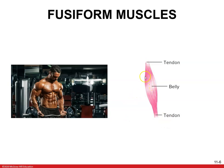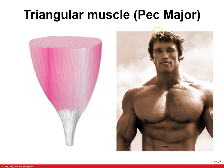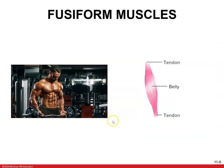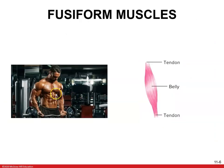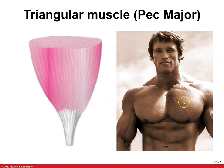Remember, tendons attach muscle to bone and ligaments attach bone to bone. Then you've got a triangular muscle — this is Arnold Schwarzenegger, who was our governor — broad on one side and then narrow on another side. Obviously, all these guys are doing a little bit of supplementation. And in his autobiography, he definitely did steroids for sure.